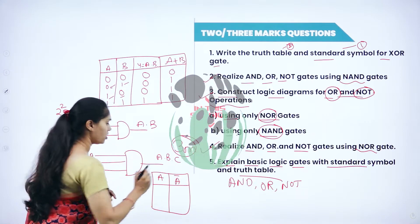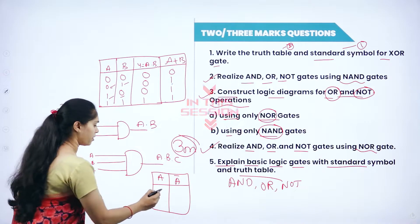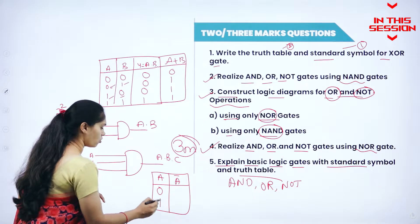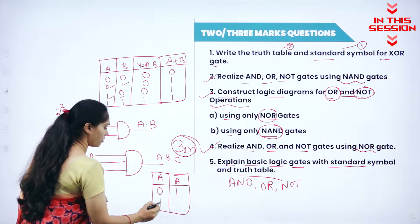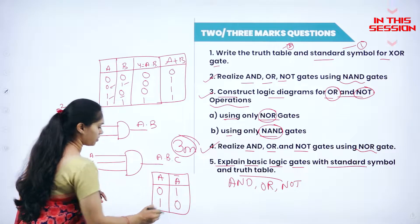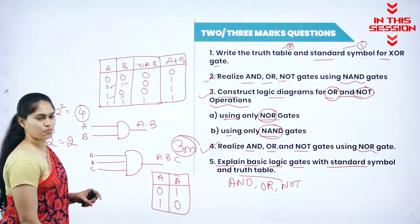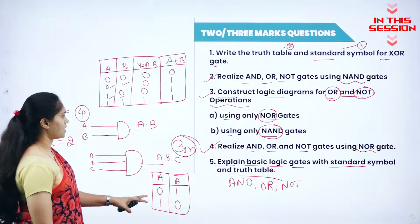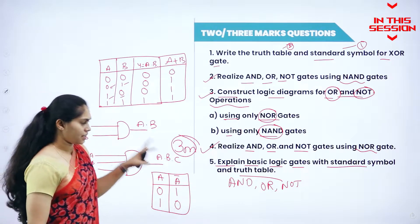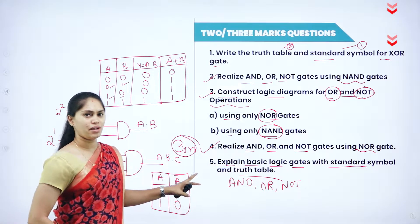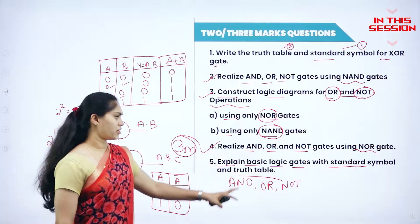If I consider A as my input, A bar will be my output: 0 becomes 1, and for 1, it will be 0. This is the logical symbol and this is the true table that you have to write.